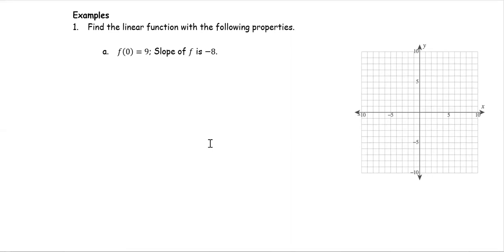f(0) = 9 gives us the ordered pair (0, 9), which is in the form (0, b). Therefore, b = 9.